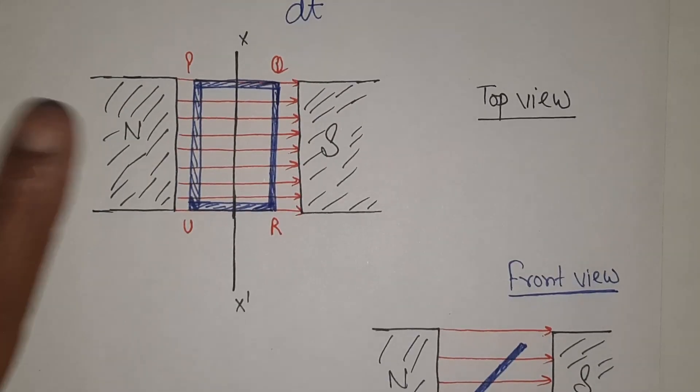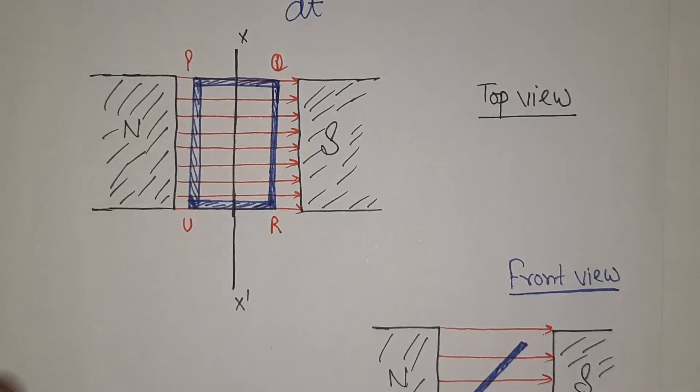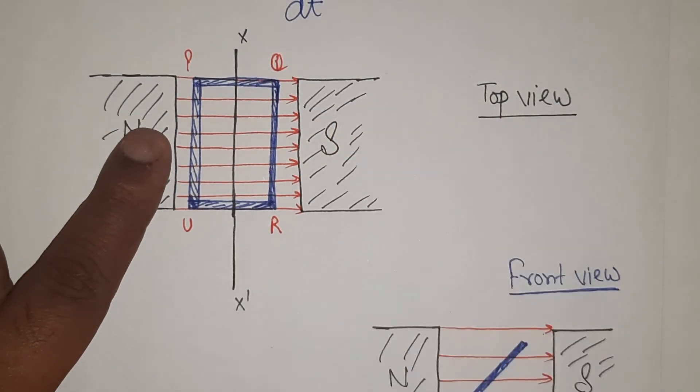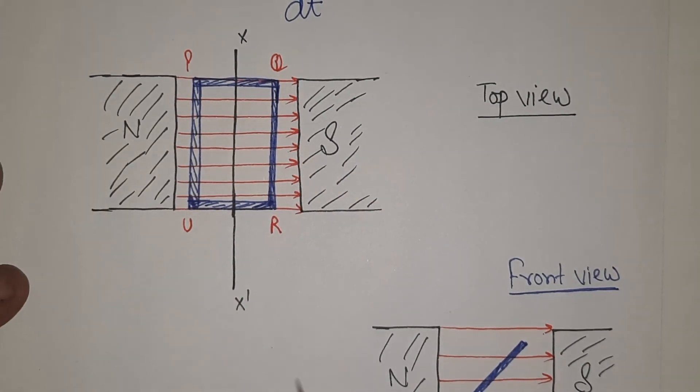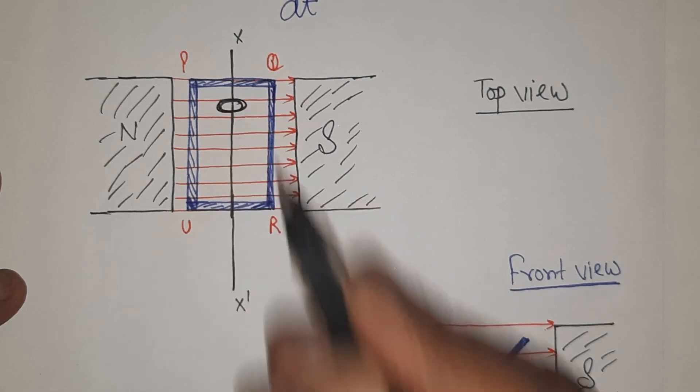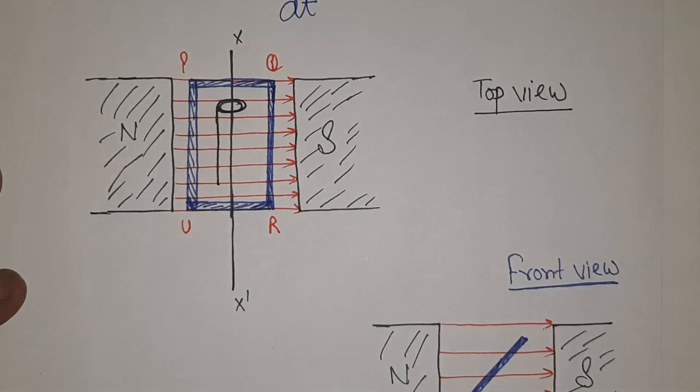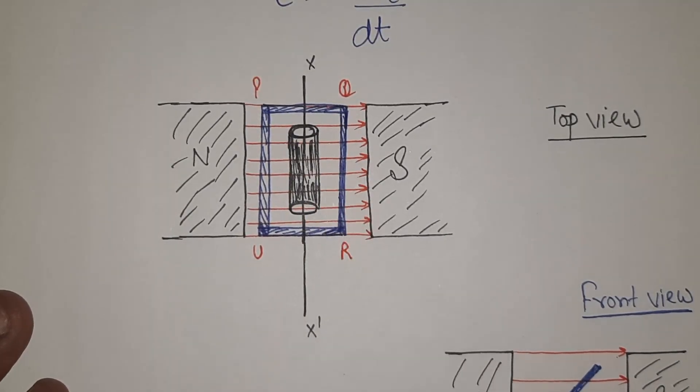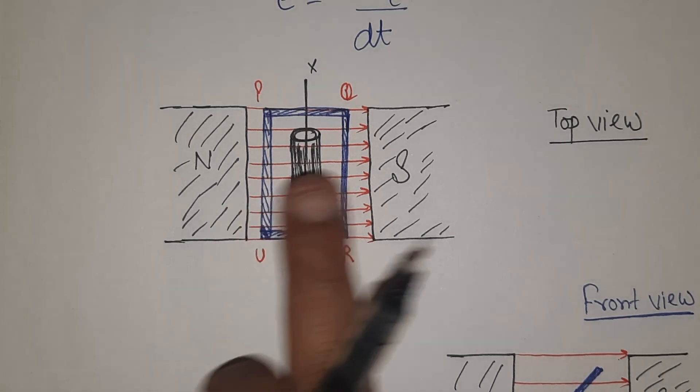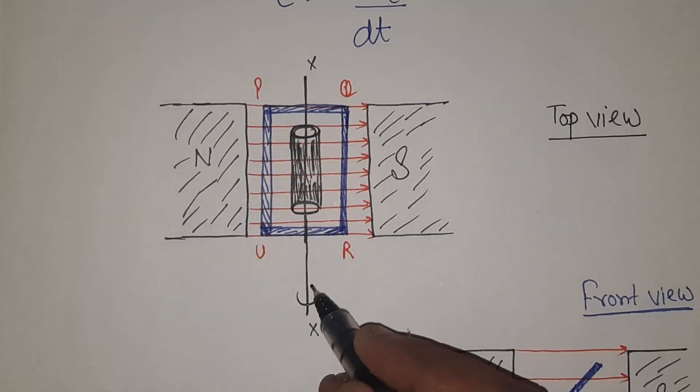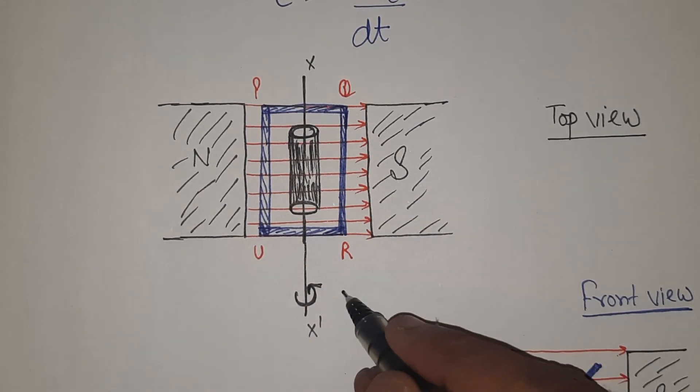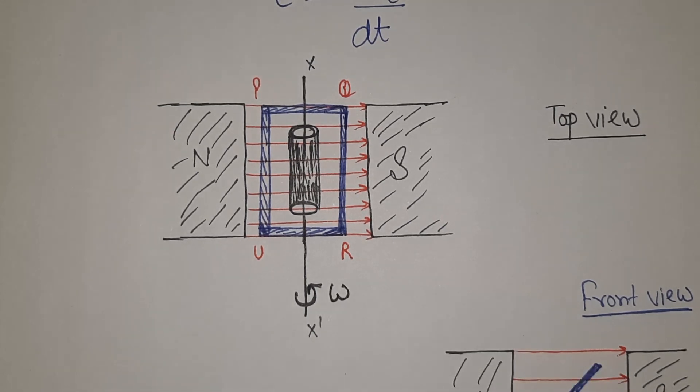Now, what we have in the system? North and south magnetic poles producing magnetic field. Then PQRU is the rectangular coil having N number of turns. Now to have better effect of the magnetic field in these poles, what we do basically is along the axis of the coil, a soft iron core is placed. This coil is rotated with angular velocity omega around this axis xx prime.